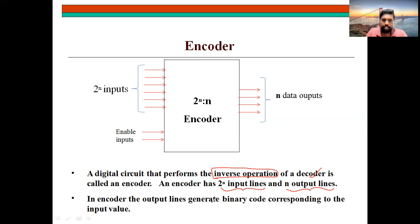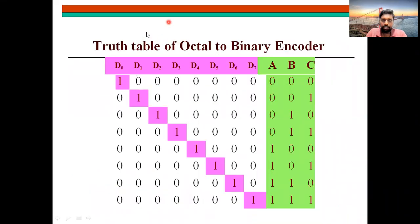In an encoder, the output lines generate binary code corresponding to the input value. The truth table operation will be entirely the same — just reversed. In the previous decoder, whatever inputs were present will become constant outputs, and whatever outputs were present there will become inputs here. I took an example of 8-to-3. Previously it was 3-to-8, so now I take it as 8-to-3.